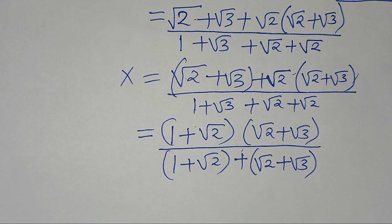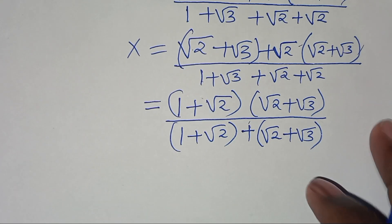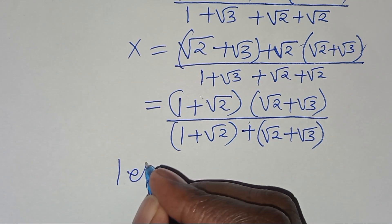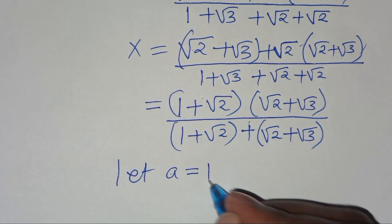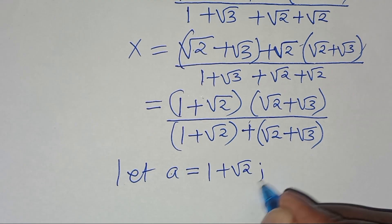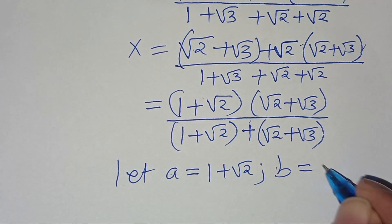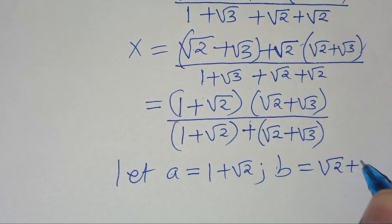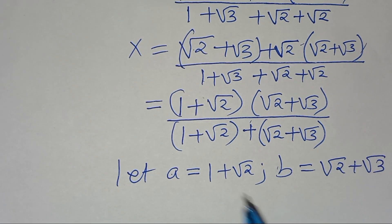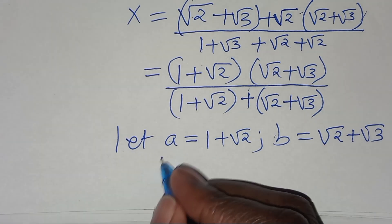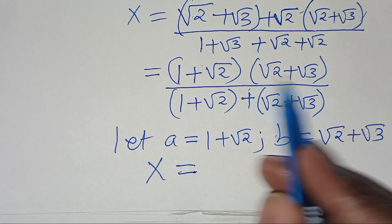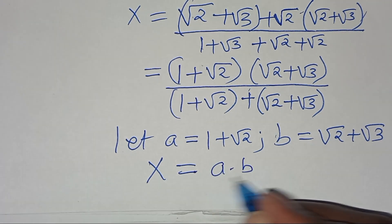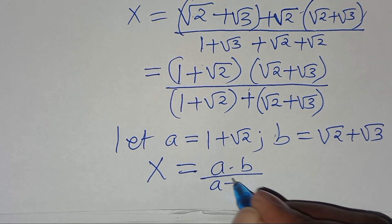Now from here, let a equal 1 plus square root of 2, and let b equal square root of 2 plus square root of 3. Substituting a and b, x will be equal to a times b divided by a plus b.